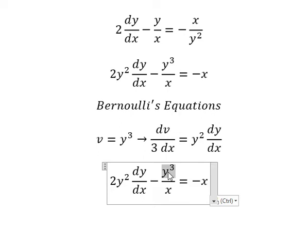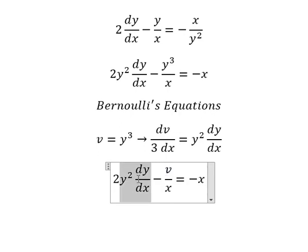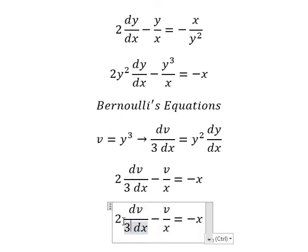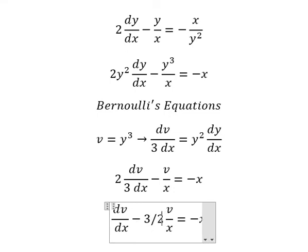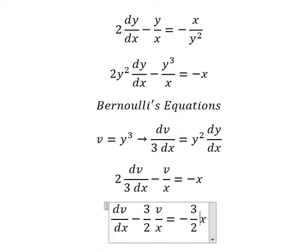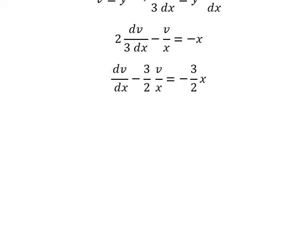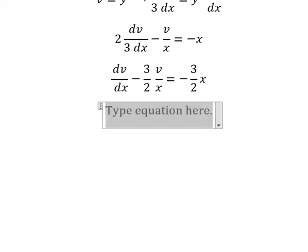We substitute: this term becomes v, and this term becomes the corresponding expression. Now we multiply both sides by 3 over 2. Next we have v and the first derivative of v, so we can apply the integrating factor method.